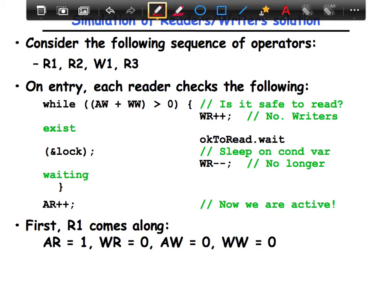So the first reader comes along, there's no one in the system. It's completely clean. Assume that we're starting off with the system with no active readers, no active writers, no waiting. It's all clean.